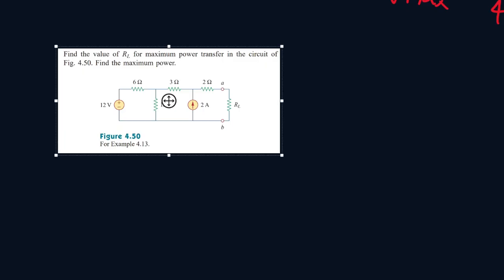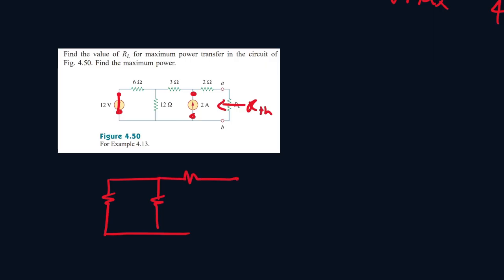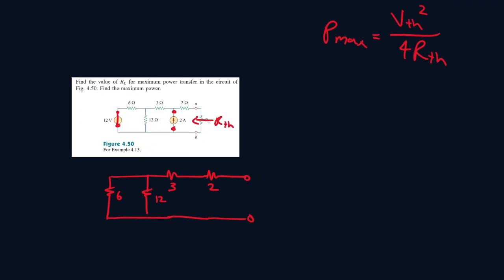Now let's actually find RTH. We start by ignoring RL. We short circuit one terminal and open the other. The resistors combine as: 1 over 6 plus 1 over 12 plus 1 over another, giving 4 plus 3 plus 2, so RTH is equal to 9 ohms.